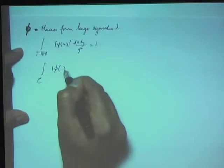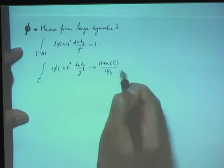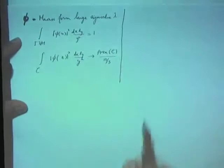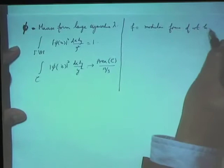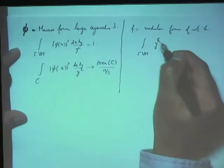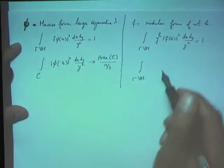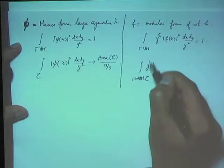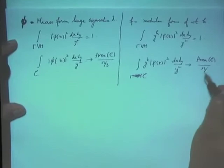We are interested in understanding what happens to P when you restrict to a nice subregion of your fundamental domain. On the holomorphic side, you want to think of modular forms of weight K, normalized so that their L2 norm is 1. We want to ask: as K goes to infinity, if you restrict to a compact set C, does this go to area of C over pi over 3?